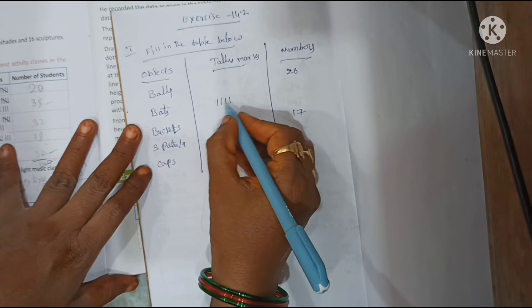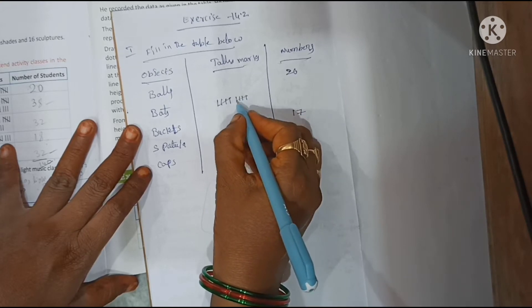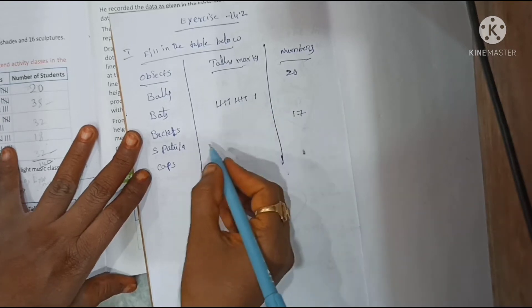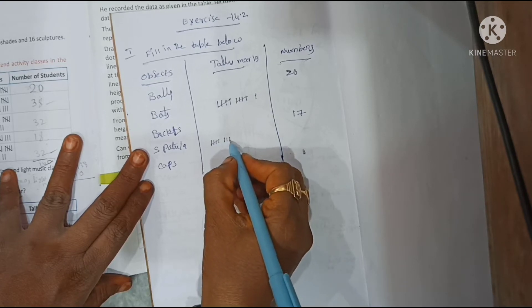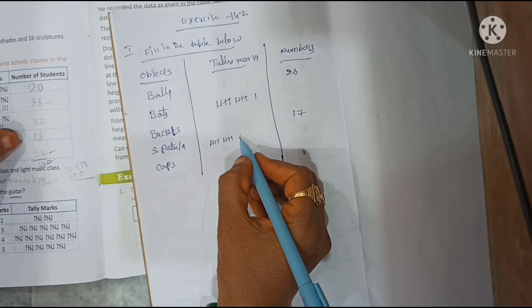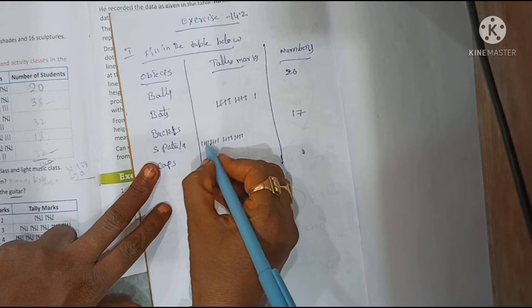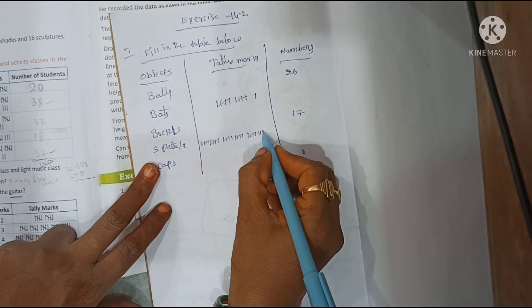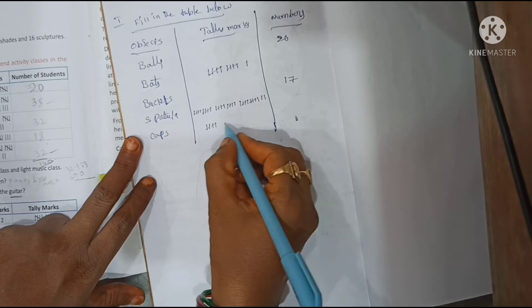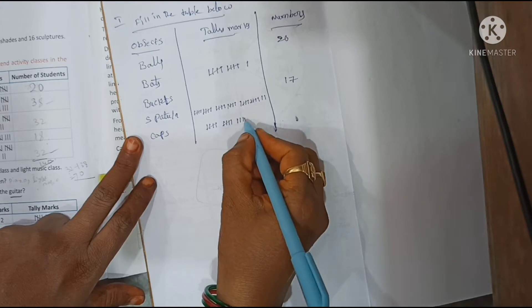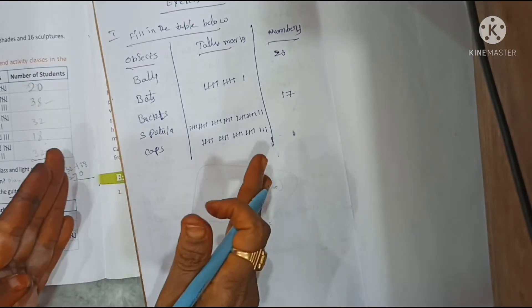For bats, the tally marks are given. We count: one, two, three, four, five — that's one group of five. Then again one, two, three, four, five — and one more. For spatula, the tally groups are: one, two, three, four, five; one, two, three, four, five; and continuing for six groups. For caps: five groups of five, then one, two, three — so we convert all tally marks to numbers.